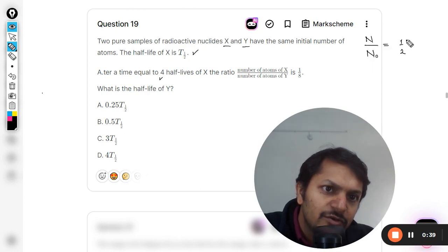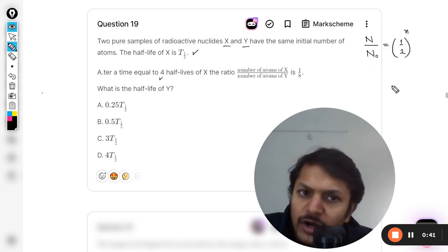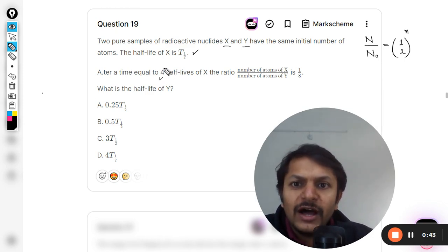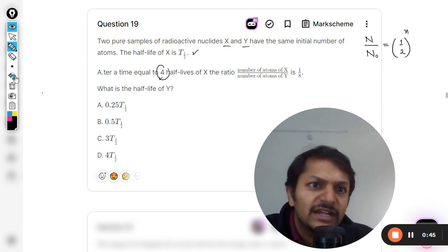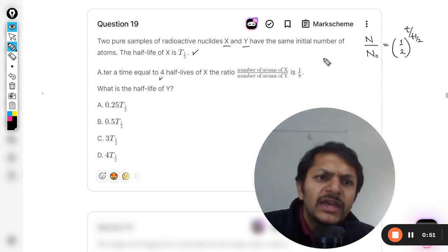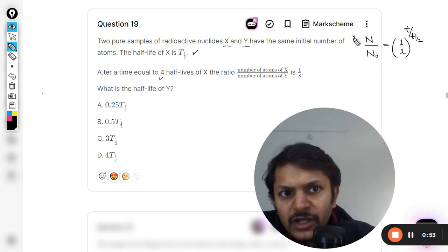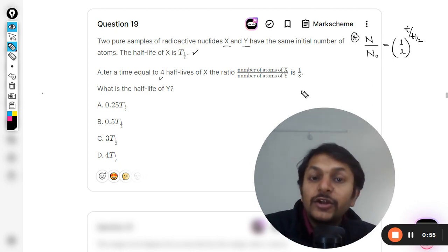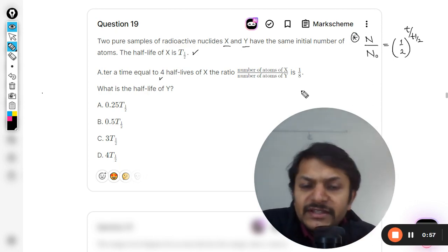N by N-naught is equal to one-half raised to power number of half-lives, like four half-lives of X have been passed. But instead of this, we can also write it as t divided by t-half. One is the same thing, isn't it?